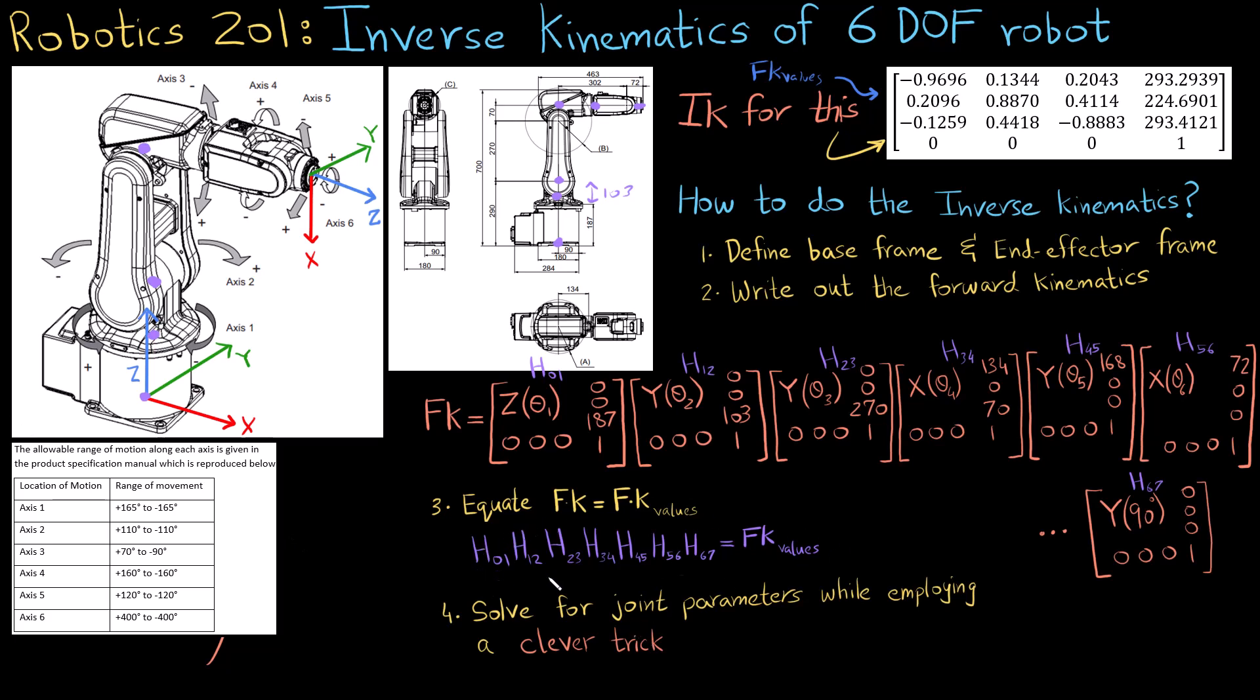Then what I do is, once I equate these out, I would have on the left side all of these would have thetas in them: theta 1, theta 2, theta 3, theta 4, theta 5, and theta 6. And on the right I have a matrix with all numbers, and I just equate them.